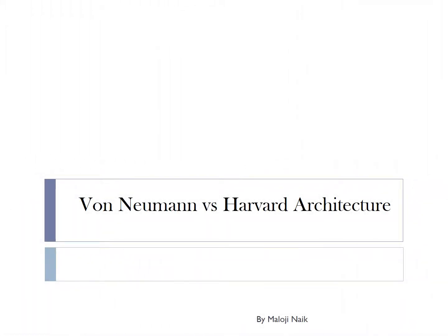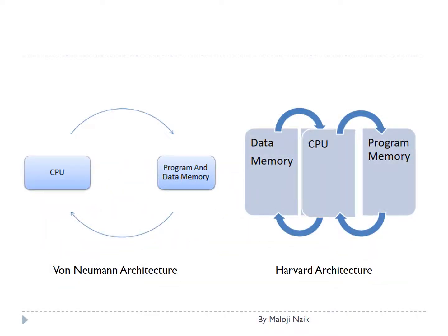There are two types of architecture: Von Neumann architecture and Harvard architecture. In Von Neumann architecture, program and data memory are common, so there will be a single memory which will hold both program and data. Whereas in Harvard architecture, data memory and program memory are two separate entities.